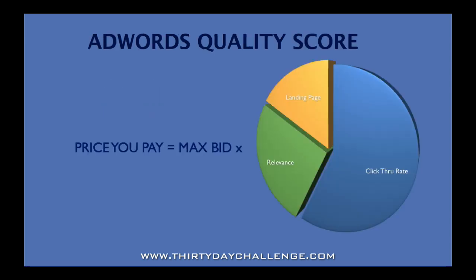How does Google actually work? It's basically an auction service. What you actually pay when someone clicks on your ad is the maximum bid you're willing to pay times your quality score. The quality score is an algorithm that Google has put together and has released a little bit of information about.